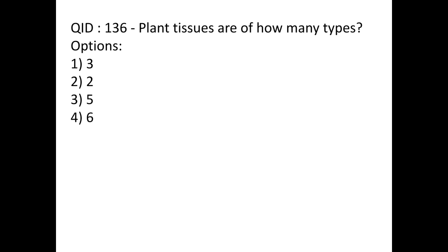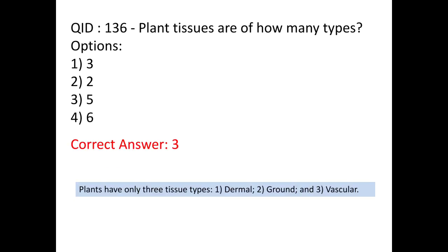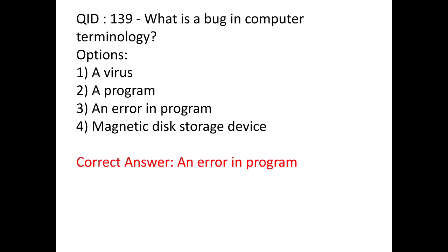Plant tissues are of how many types? Plant tissues are of three total types: dermal, ground, and vascular. Remember that there are three types of plant tissues for your next exam.